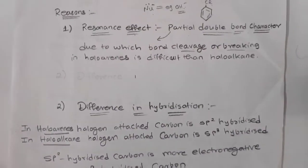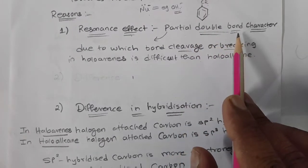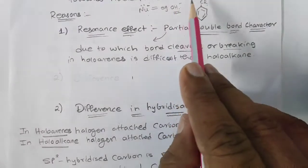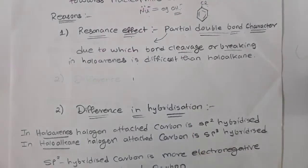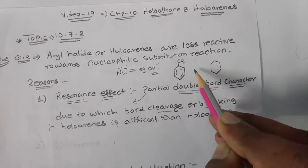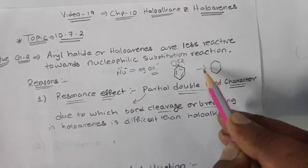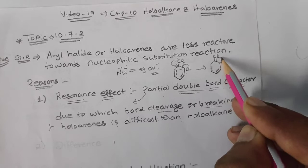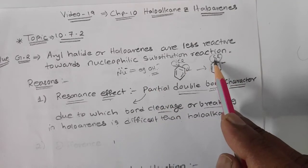The first reason is clear: formation of a partial double bond makes it difficult to break the C–Cl bond, which is why OH⁻ cannot be substituted on the benzene ring. In resonance structure 2, the electron pair is donated, the ring gets activated, a C–Cl double bond is formed, and it becomes difficult to break.